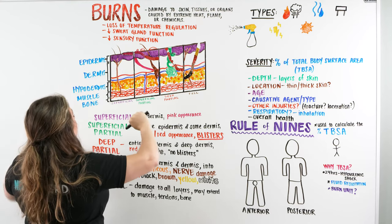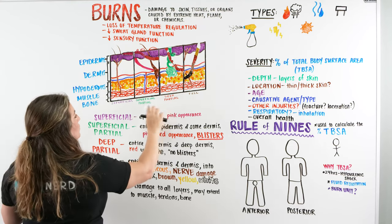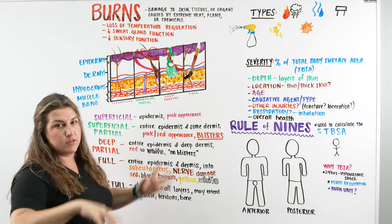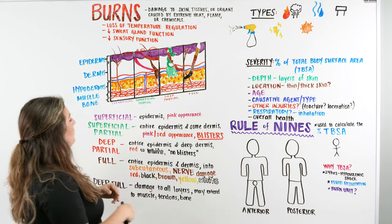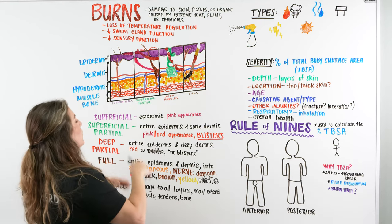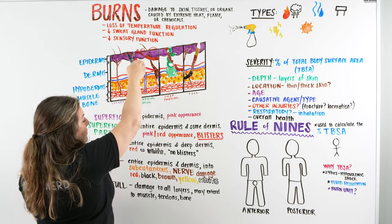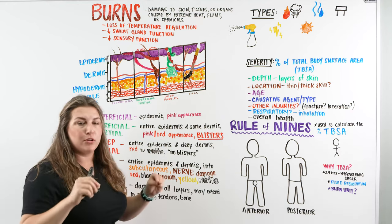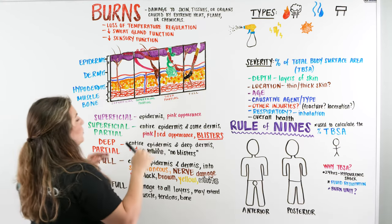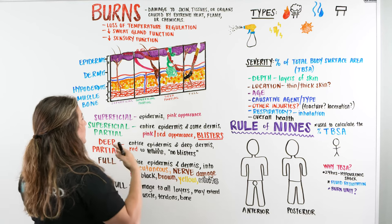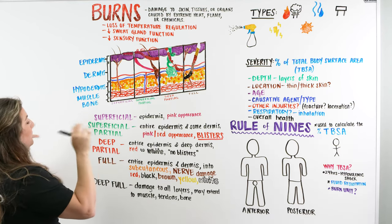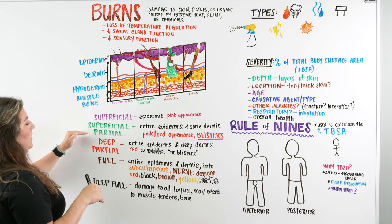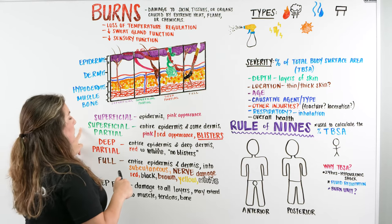When we start to move into more severe burns, like a superficial partial, and then a deep partial, these two, you can think of them together, that they're going to go into the dermis. The superficial partial is going to be more of the upper layer of the dermis. And then the deep partial is going to be the lower layer of the dermis. So let's talk about the superficial partial. Superficial partial burn is going to go through the epidermis and into some of the dermis. Typically, it's going to be pink or red in appearance. And the selling point, the key note you want to look for in your NCLEX questions is, are there blisters?